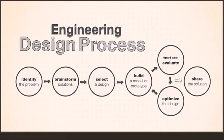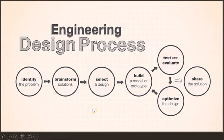Today, the first four parts of this design process, we're going to do together. We're going to identify the problem, we're going to brainstorm a solution, select and build a design and a prototype. It's going to be your job, with a little bit of guidance, to test, evaluate, and optimize your design for your straw rocket once we get there.